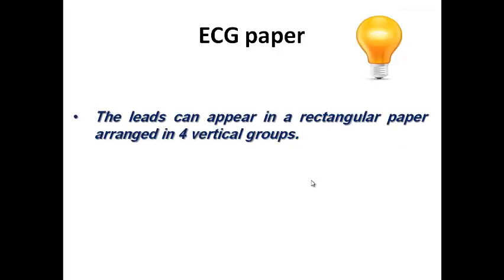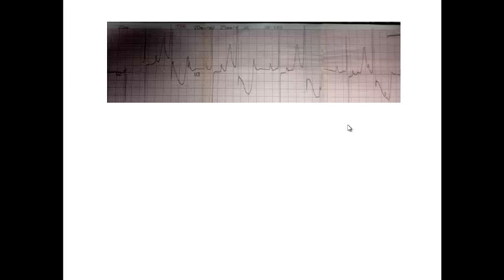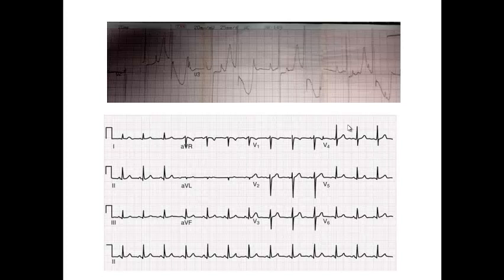ECG leads can appear on a rectangular paper arranged in four vertical groups, or in a long narrow strip in some older machines. The rectangular paper format is preferred because when following up a patient with multiple ECGs, it is easier to compare all 12 leads at once. The long rectangular paper showing three groups of vertical ECG leads is the most preferred form, though in the ER you may encounter the long strip format.